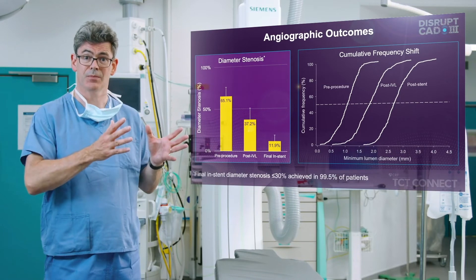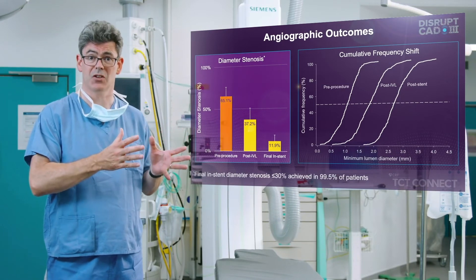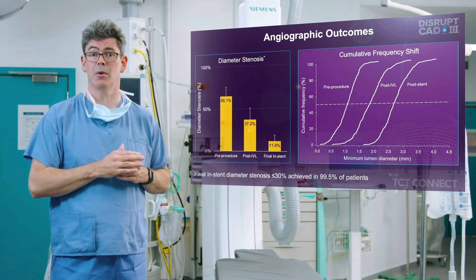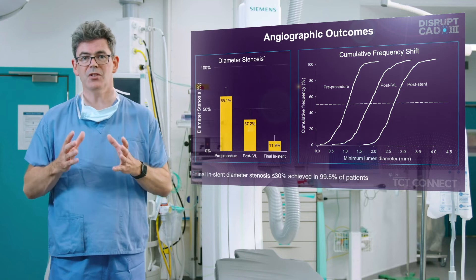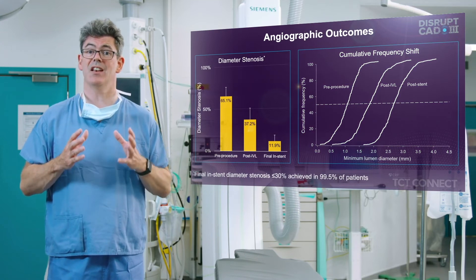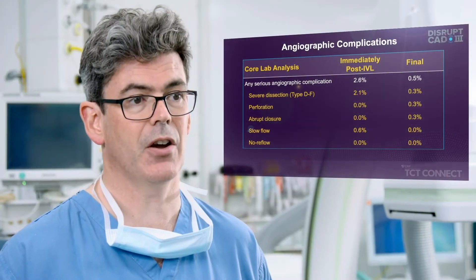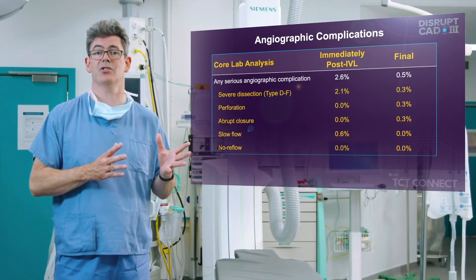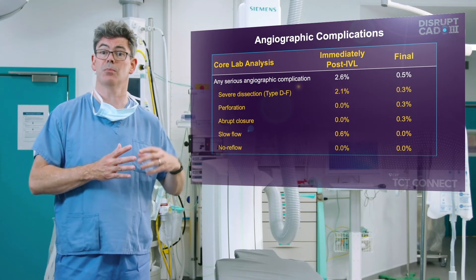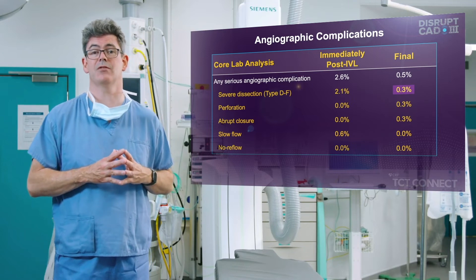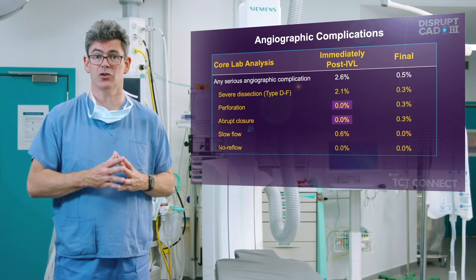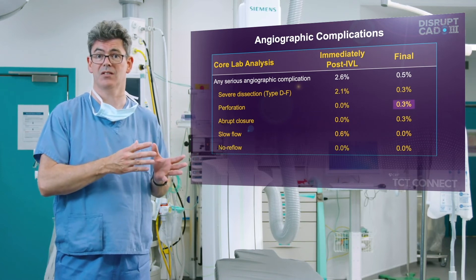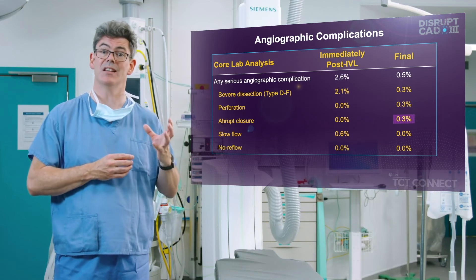Angiographic outcomes show a stepwise reduction in stenosis severity from pre-procedure to post-IVL and final in-stent, and a corresponding stepwise increase in minimum lumen diameter. A diameter stenosis of less than 30% was achieved in 99.5% of patients. Regarding angiographic complications, severe dissection type D through F was observed in 2.1% post-IVL, reduced to 0.3% following stent deployment. Perforation, abrupt closure and no-reflow were all zero post-IVL, with perforation and abrupt closure at 0.3% and no-reflow remaining zero at procedure end.